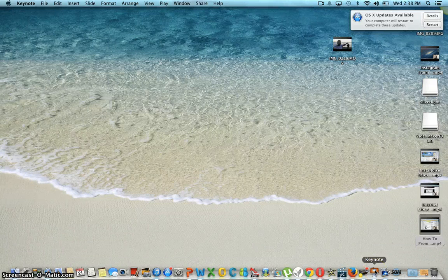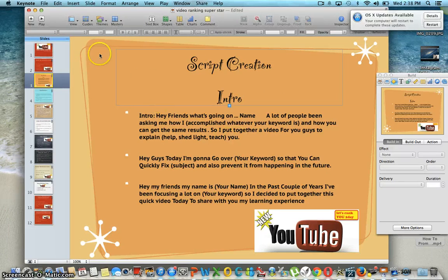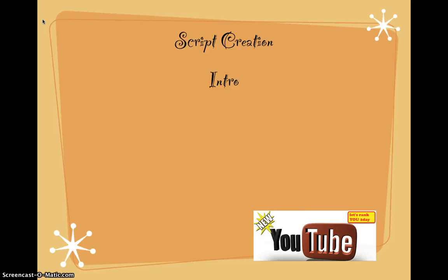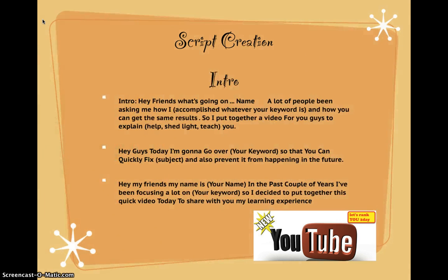Now we're going into what's called script creation. You need to know exactly what you're gonna say in your video to get people to buy from you. When I'm making my video, there are about four steps I usually cover: there's gonna be an intro, a body pre-sell — something I say before I go into explaining what I'm about to sell — then the body where I give explanation, problems, and solutions, and lastly a call to action.